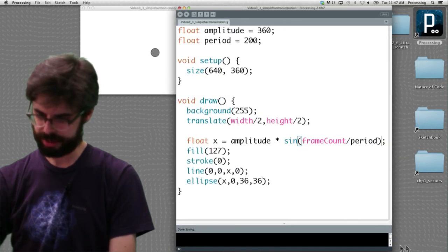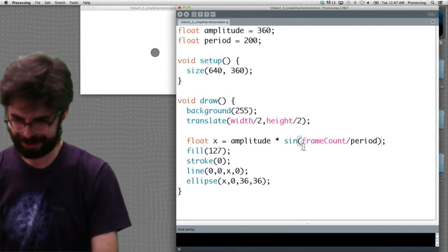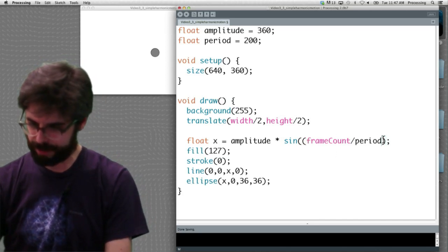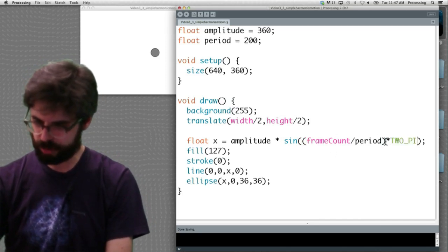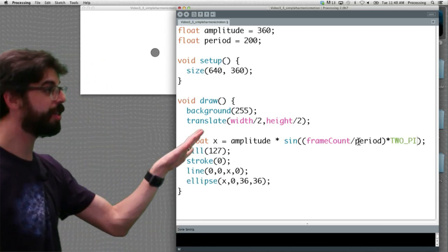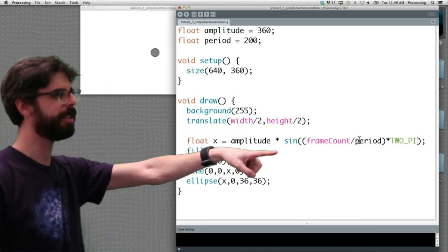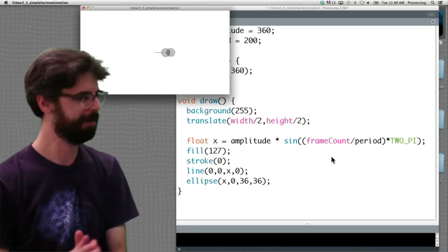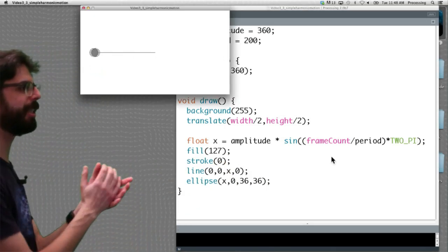It's very sad. I'm going to make this a little wider. I'm wasting time in this video doing that, but I'm going to say frame count divided by period times 2pi. So by the way, you can say 2 times pi, but there's a built-in constant in processing 2 underscore pi. So if we run this now, we can see we have this oscillating motion.